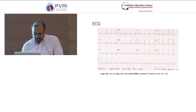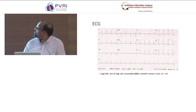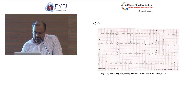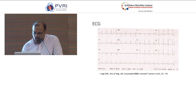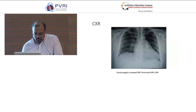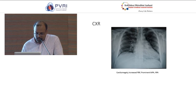His ECG showed first degree complete heart block, axis of 15 degrees, left atrial enlargement, incomplete right bundle branch block, and inverted T waves in leads 1, AVL, and V2 to V6. X-ray showed cardiomegaly with increased pulmonary blood flow and prominent main pulmonary artery and right pulmonary artery.